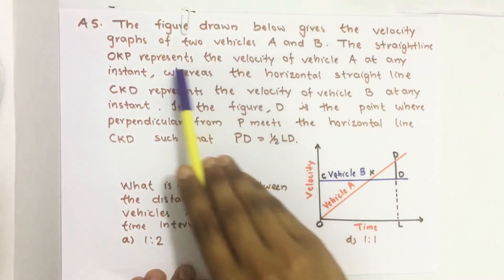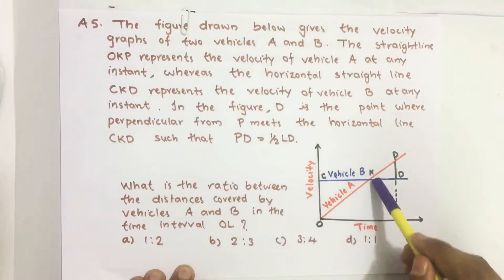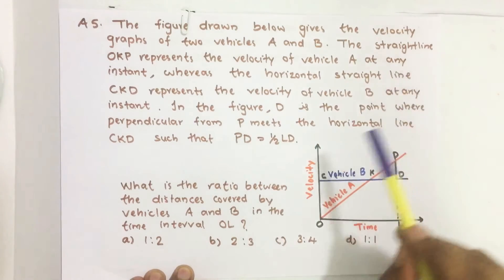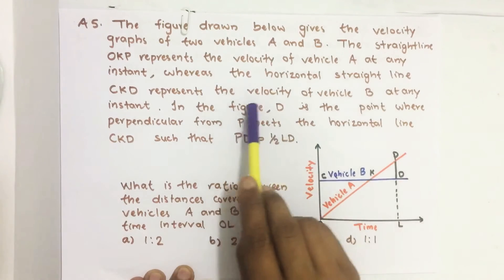The figure drawn below gives the velocity graph of two vehicles A and B. The straight line OKP represents the velocity of vehicle A at any instant, whereas the horizontal straight line CKD represents the velocity of vehicle B at any instant.